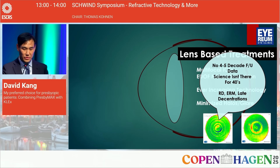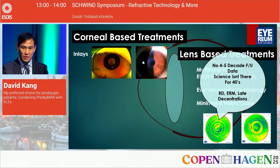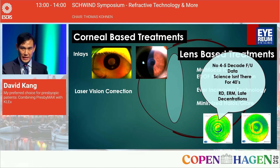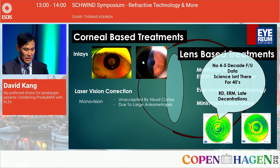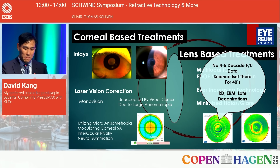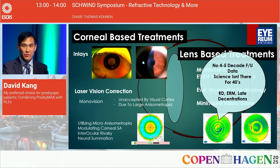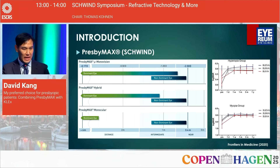For corneal-based treatments, there are inlays, and we know where they all went — even after their removal we have some very unhappy patients. For laser vision correction, traditional monovision is usually unaccepted by the visual cortex due to large amounts of anisometropia between the dominant and non-dominant eyes. We now use minute amounts of micro-anisometropia, modulating corneal spherical aberration, and utilizing interocular rivalry between dominant and non-dominant eyes alongside bilateral binocular neural summation.